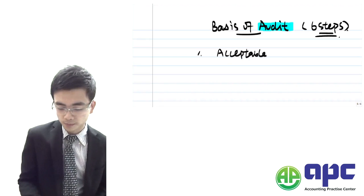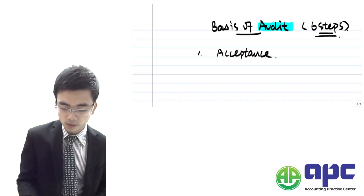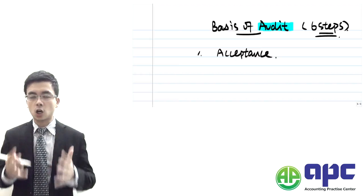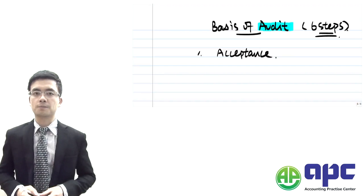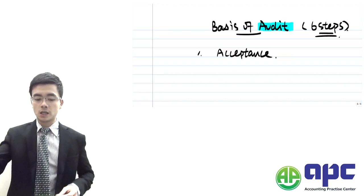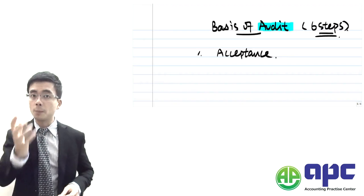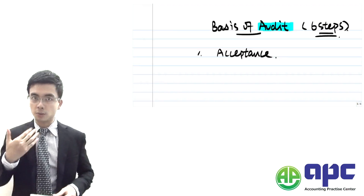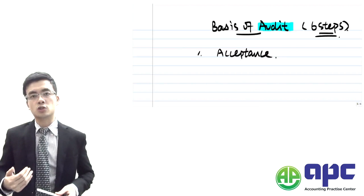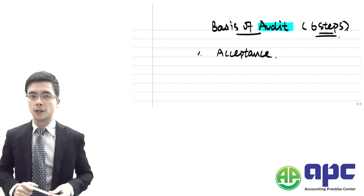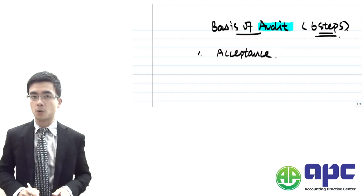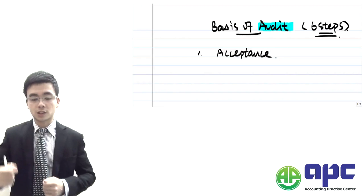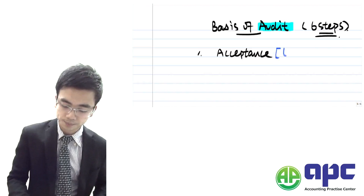This is the acceptance stage. All we're going to do within the acceptance stage is accept the contract with the client's company, because we're going to check the client's company's financial statements. Before we check that, we need to get the permission of the client's company. Because we are profit-making organisations from an audit firm's perspective, we're going to charge fees to the client's company. That has to be written down into the contract — the engagement letter.